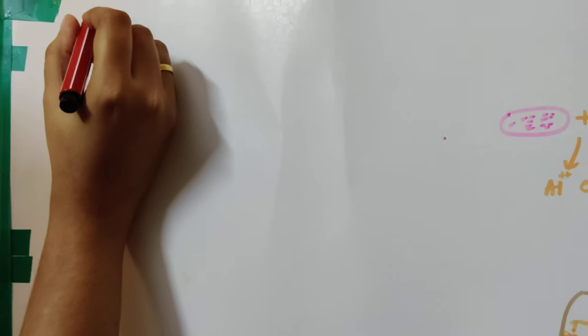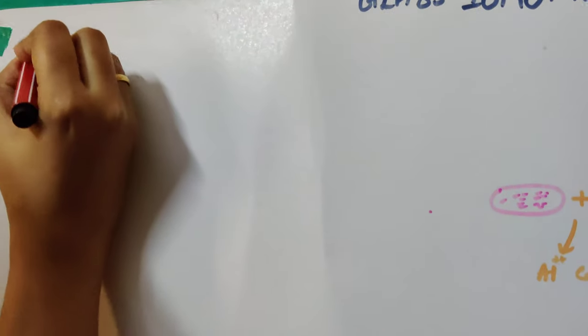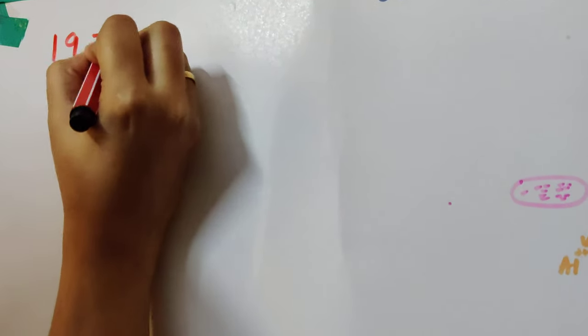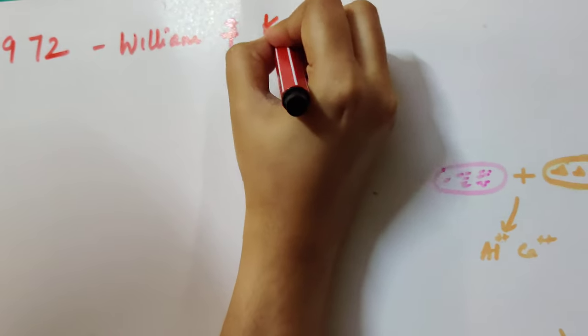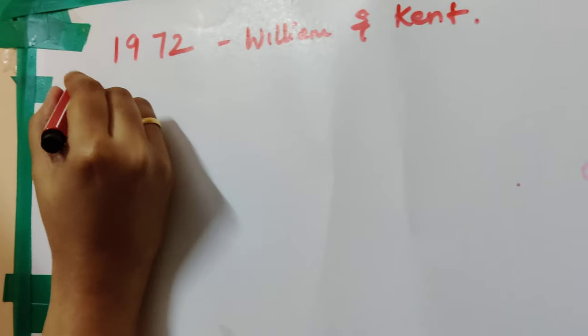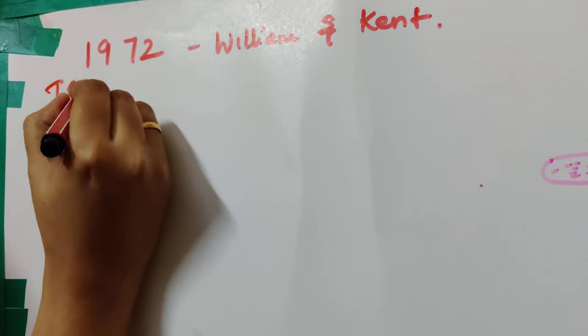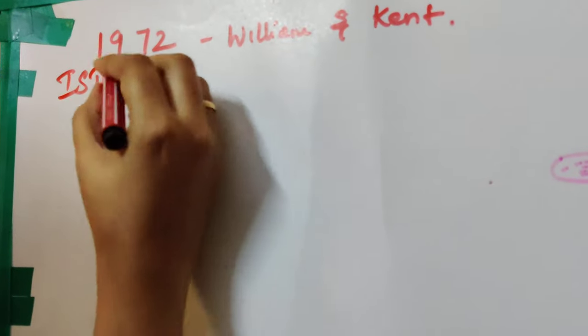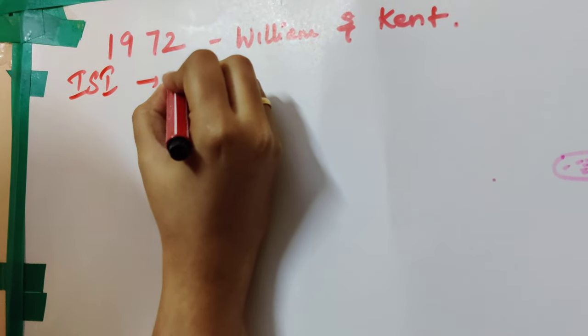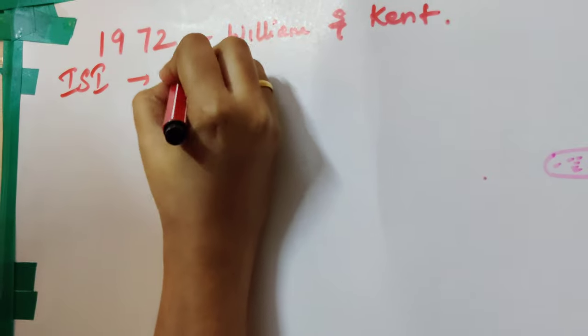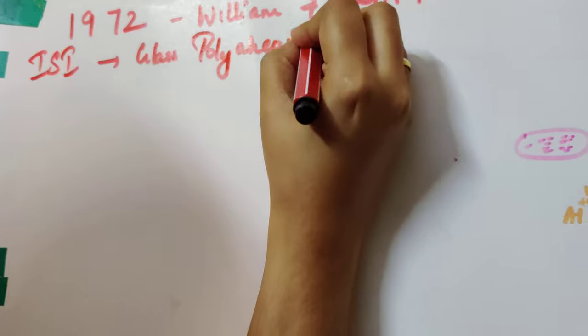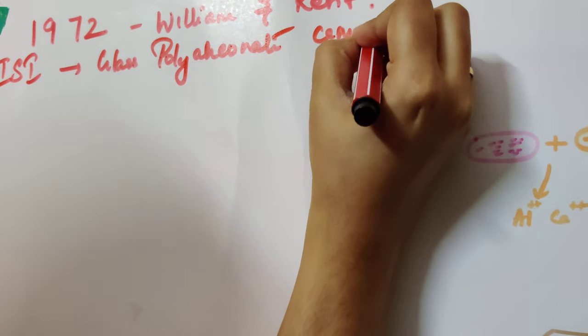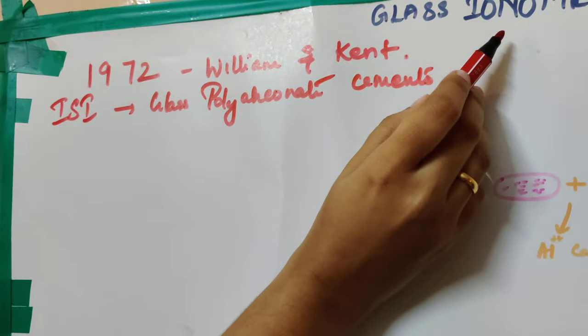Today we are going to see about glass ionomer cement. Glass ionomer cement was introduced in the year 1972 by William and Kent. According to the International Association of Standardization, the glass cements are to be called as glass polyalcunate cements, but GIC has been a common name used among dental professionals.